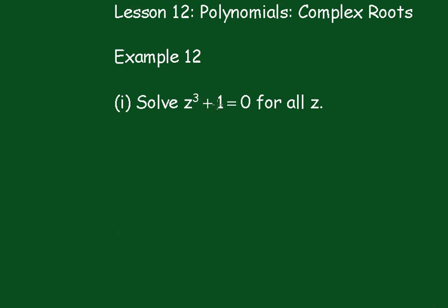Now we'll factorize this first and write it this way: z plus 1 times z squared minus z plus 1 equals naught. Straight away we'll see the first root, z equals negative 1.